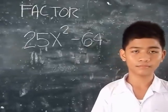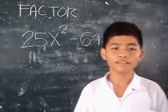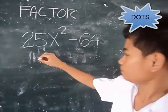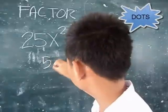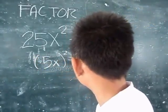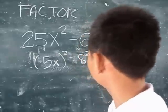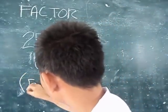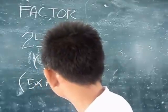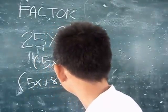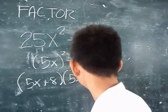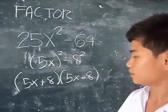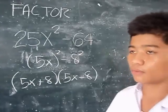Factor 25x² minus 64. We write this in the form of difference of two squares. The factors are (5x plus 8) and (5x minus 8).